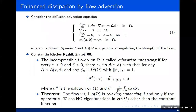Let's go back to the diffusion-advection equation. V is incompressible, we have Neumann boundary condition, and no-penetration boundary condition. The V is considered time-independent at the moment, and A is a parameter regulating the strength of the flow. In 2008, Constantin and co-authors introduced the idea of so-called relaxation enhancing flows. An incompressible flow V on the domain is called relaxation enhancing if, for every tau and delta, there exists A such that for any A greater than this threshold and any normalized initial datum, the solution converges to its average as fast as you wish.